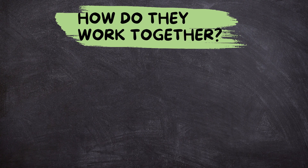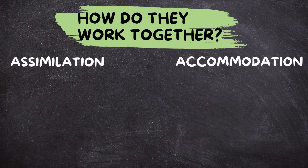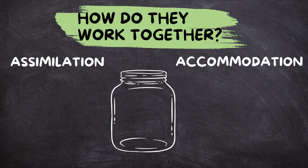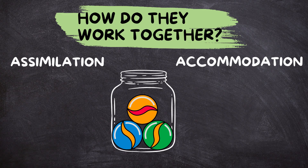Accommodation and assimilation often work together when we learn new things. Imagine you have a jar that represents your mind. This jar is your brain, and it can hold your ideas and thoughts. When you learn something new, it's like adding more marbles to the jar.